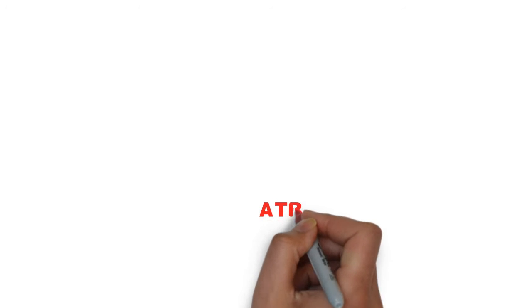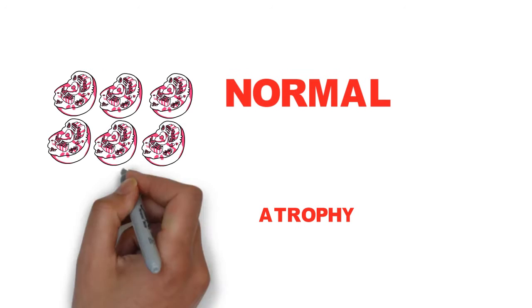So coming to the third adaptation which is atrophy. Atrophy is reduction in size of a tissue or organ due to decrease in cell size and number.